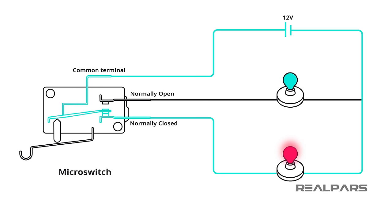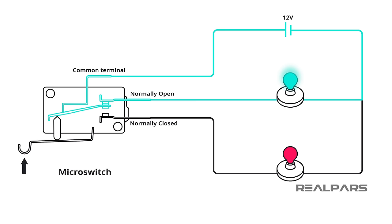Let's connect the micro switch to a lamp circuit. In the inactive state, the red lamp is on as the device is not being operated by an object pushing on the trigger. When the trigger is pushed, the device will activate and the green lamp will come on.